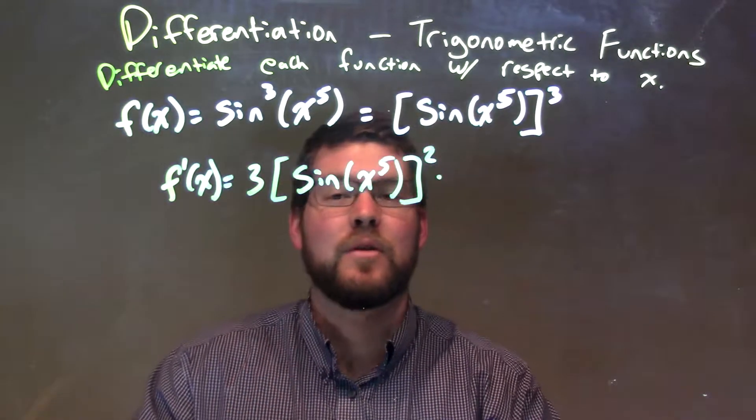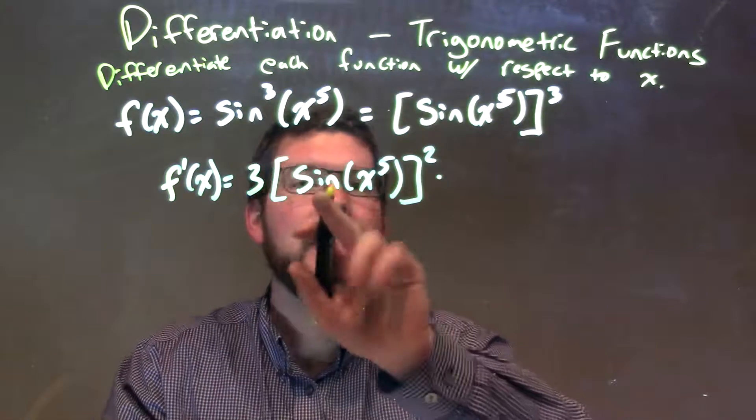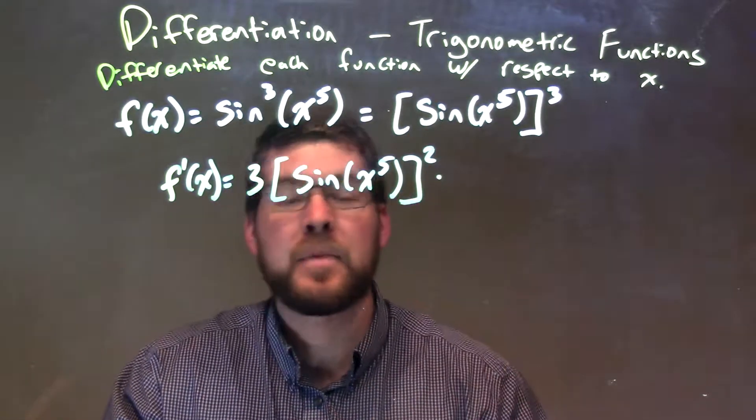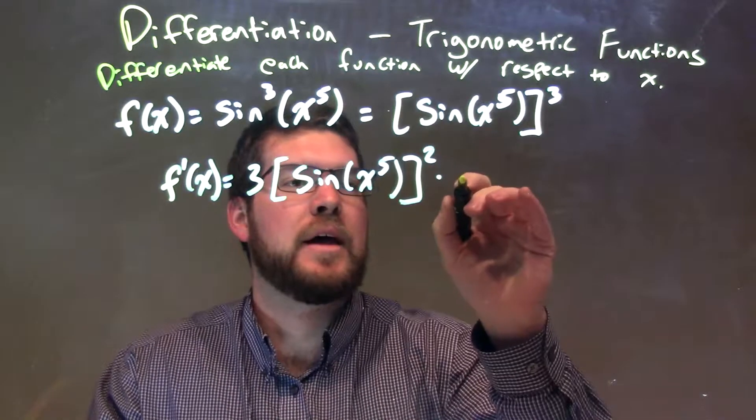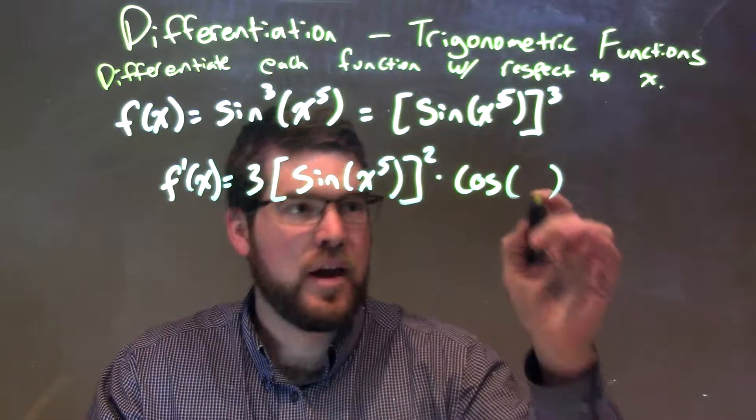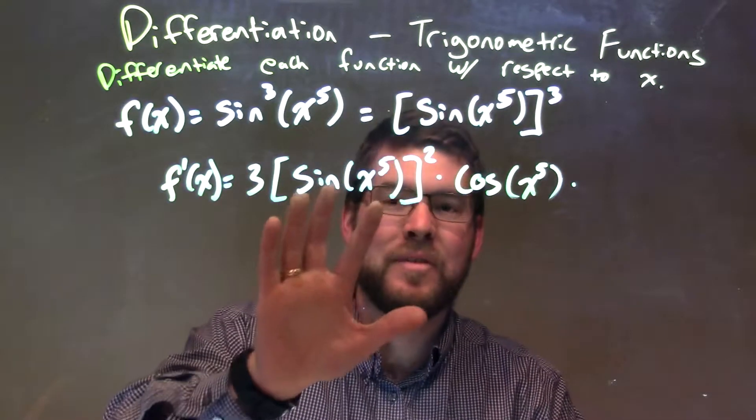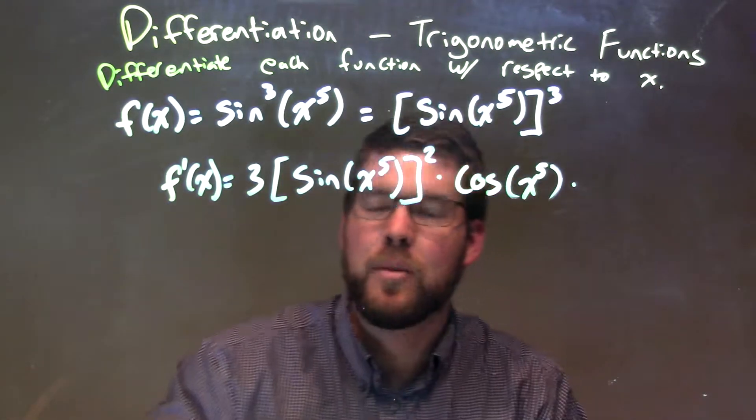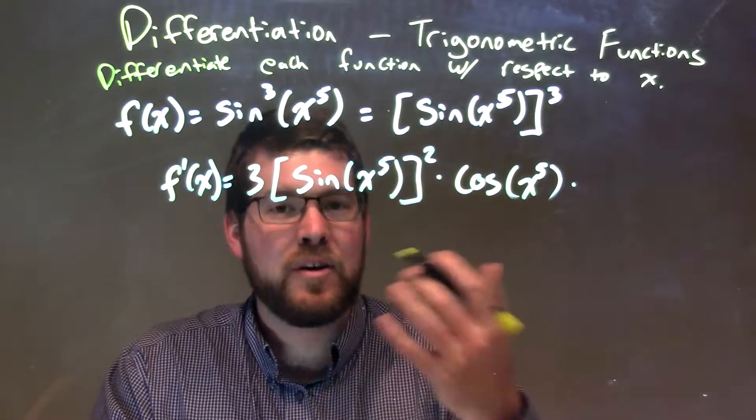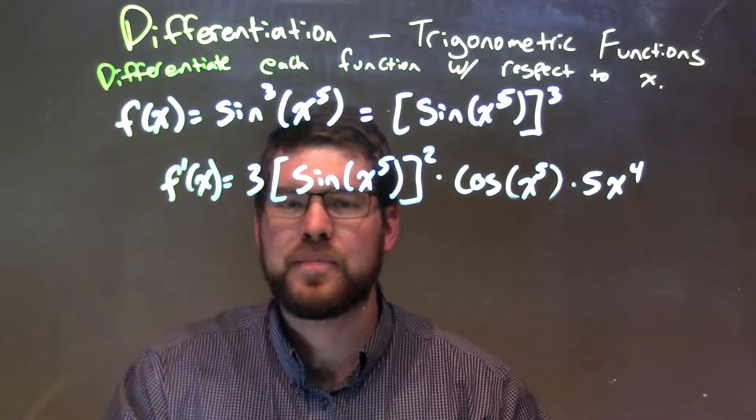Now I'll take the derivative of the inside. We always ignore these other parts right there, ignore them, and think about that inside, sine of x to the fifth. The derivative of sine is cosine, so we have cosine here of, keep the inside the same, x to the fifth, times the chain rule again, because the derivative of the inside has the second chain rule applied to it. The derivative of x to the fifth power is 5x to the fourth.